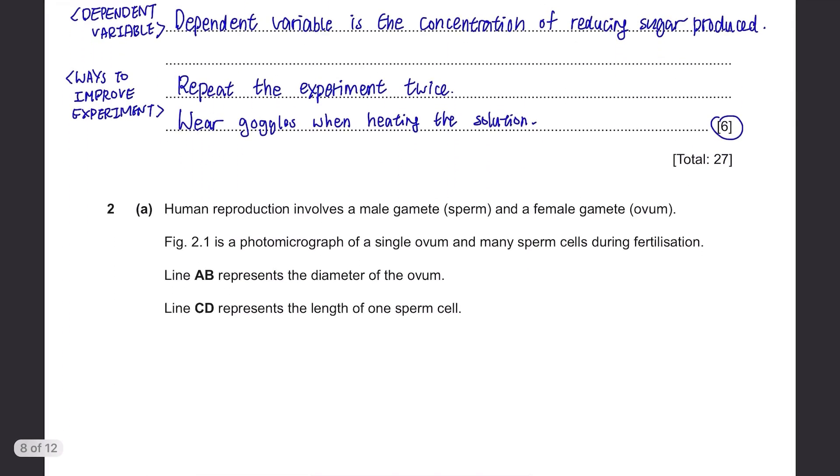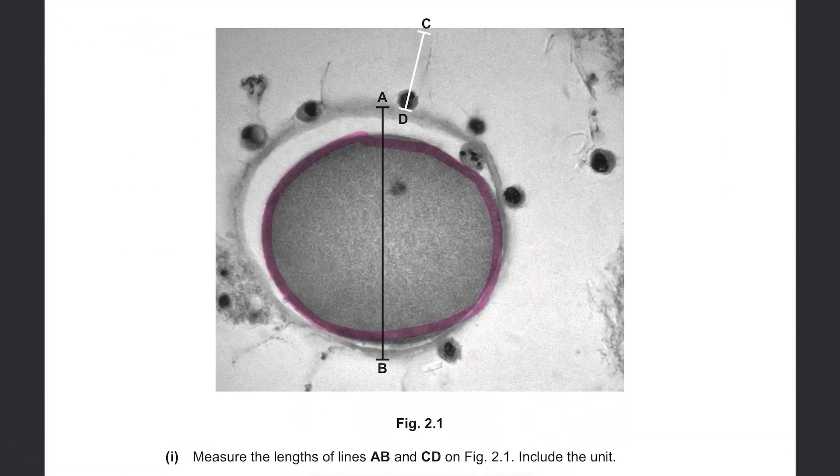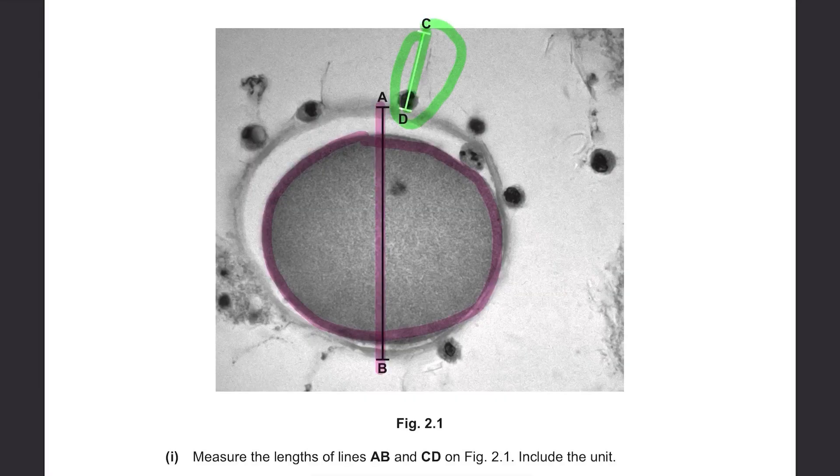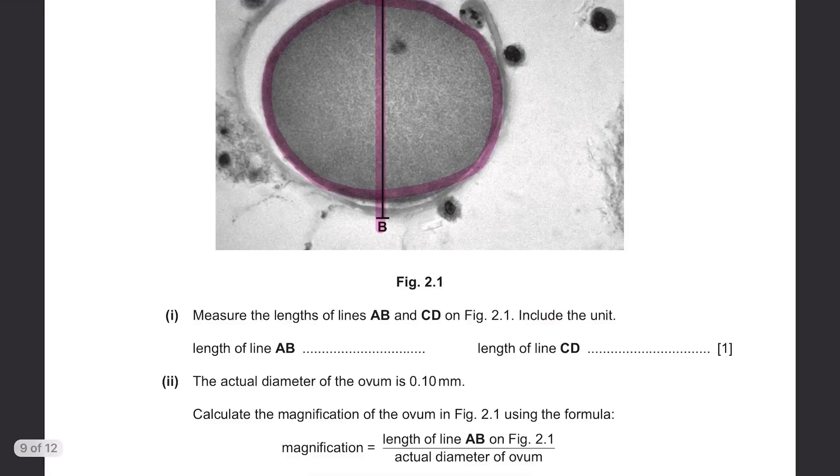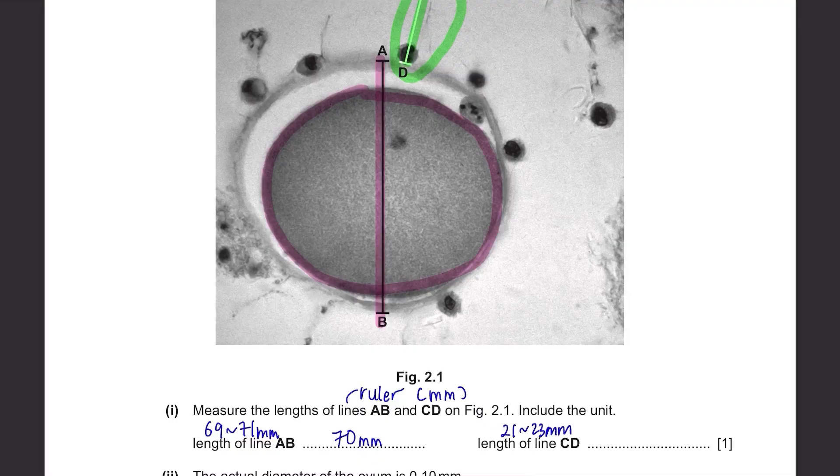Question 2. Human reproduction involves a male gamete sperm and a female gamete ovum. Figure 2.1 is a photomicrograph of a single ovum and many sperm cells during fertilization. Line A-B represents the diameter of the ovum. Line C-D represents the length of one sperm cell. This is the ovum and the diameter. This is the sperm cell and its length. Measure the length of lines A-B and C-D on figure 2.1. Include the unit. This is simple. Just measure the lines with your ruler. It should be in millimeters. For A-B, it's around 69 to 71 millimeters and for C-D, it can be from 21 to 23 millimeters.